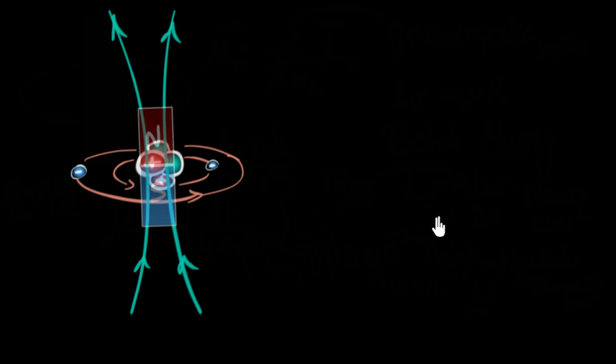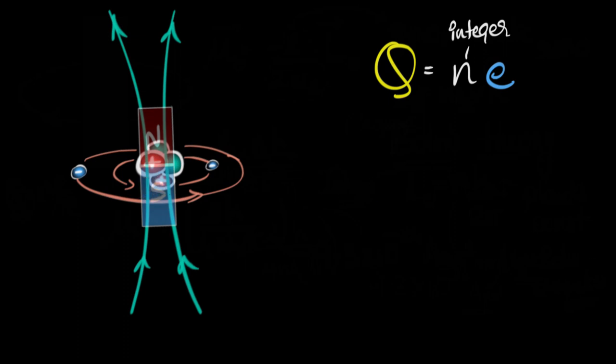Here's the question we want to try and answer in this video. Just like charges, we've seen they are quantized and they have a minimum value of E, the charge of an electron. Charges have to be an integral multiple - any charge you think of has to be an integral multiple of the charge on an electron. The question is, is there something similar for the magnetic moment of an atom? Does it also have some fundamental minimum value? Do these magnetic moments also obey the quantization principle? That's exactly what we want to find out in this video.